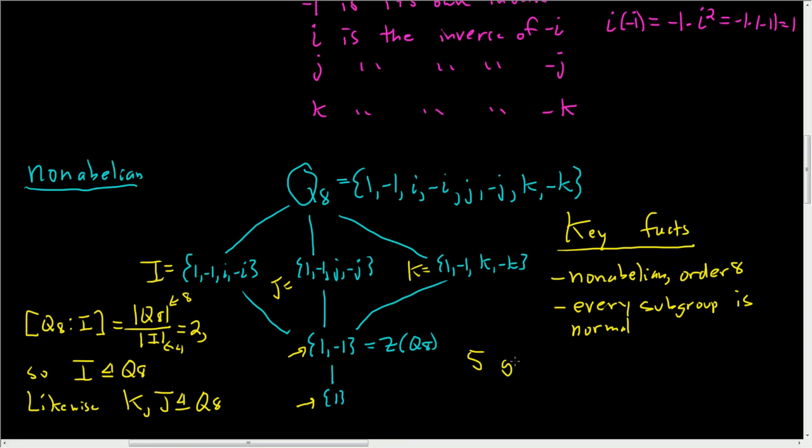Also, there's five groups of order 8. I don't want to derail from the video, but let's quickly talk about them. So we've established one that's Q8 and it's non-abelian. That's one of the groups of order 8. The other group of order 8 is the symmetries of a square. So this is the dihedral group containing 8 elements. So both of these guys are non-abelian and they're order 8.